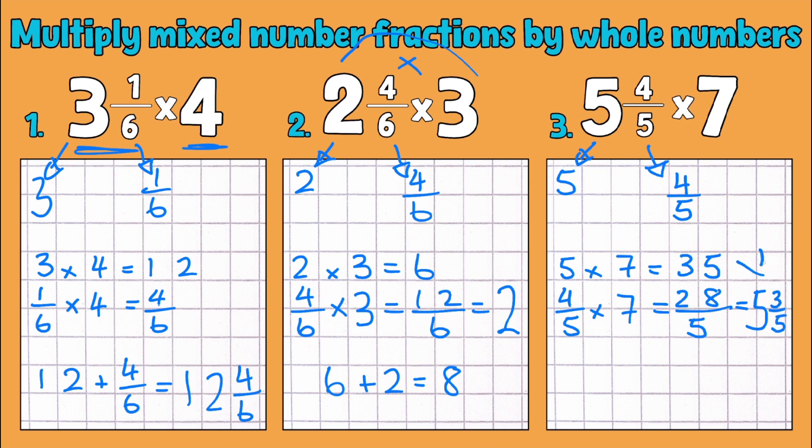And now I just need to add these two numbers back up. So 35 add five whole ones and three fifths equals 40 and three fifths.